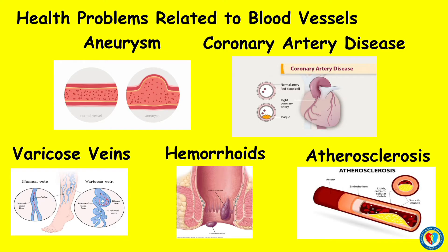Health problems related to blood vessels: An aneurysm occurs when part of an artery wall weakens, allowing it to balloon out or widen abnormally. Coronary artery disease is caused by plaque build-up in the walls of the arteries that supply blood to the heart, called coronary arteries, and other parts of the body. Varicose veins are swollen and enlarged veins that usually occur in the legs and feet.